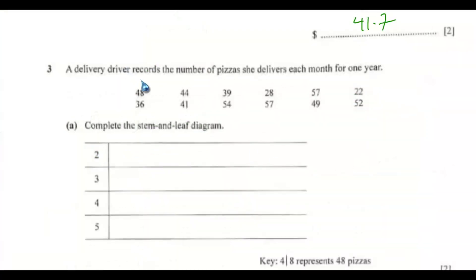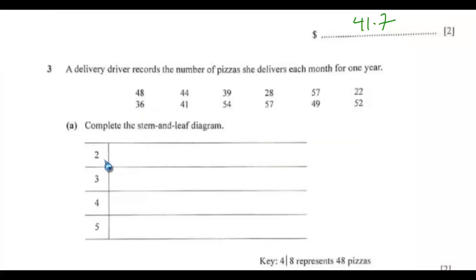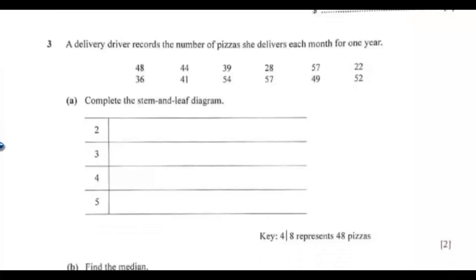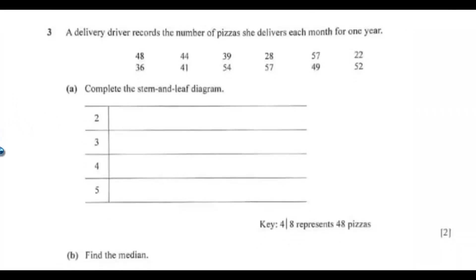Question 3. A delivery driver records the number of pizzas she delivers each month for one year. Complete this stem-and-leaf diagram. The key is 4|8 represents 48 pizzas.